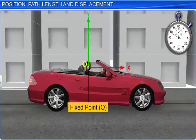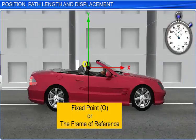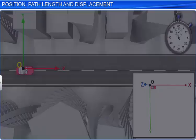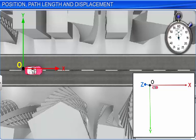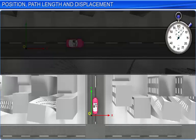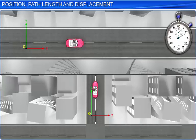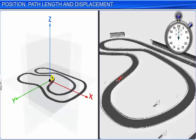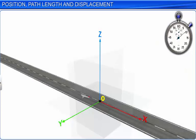If the body has one-dimensional motion, then we consider only one axis of reference — either the X axis or the Y axis. This type of motion in a straight line is known as rectilinear motion. If the body is moving in a plane, then we consider any two of the three reference axes. If the body is moving in space, which is three-dimensional, then we have to consider all three reference axes.